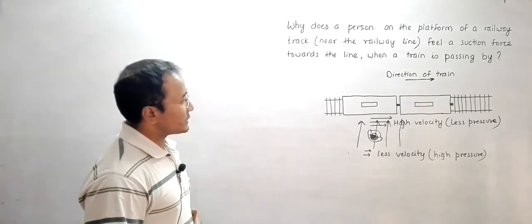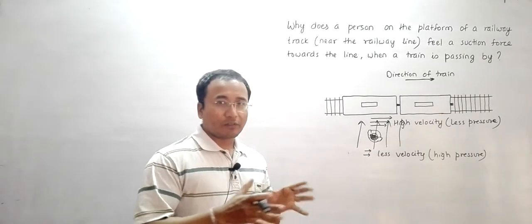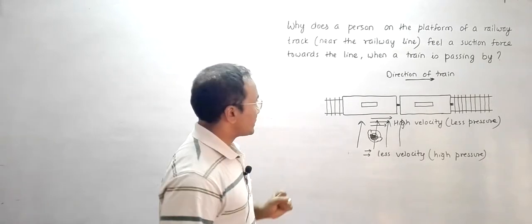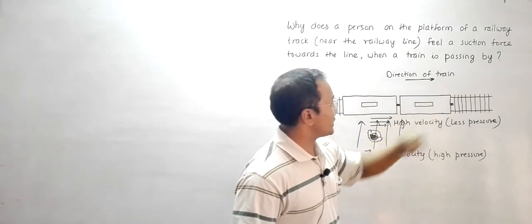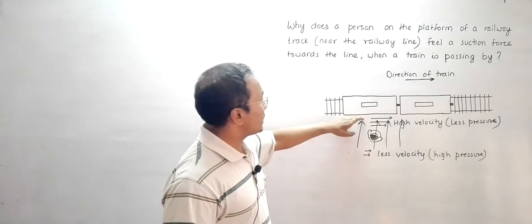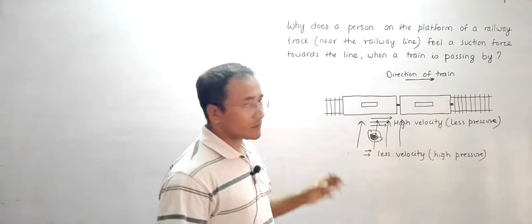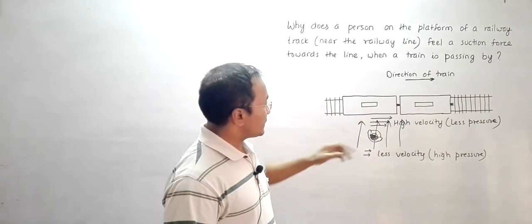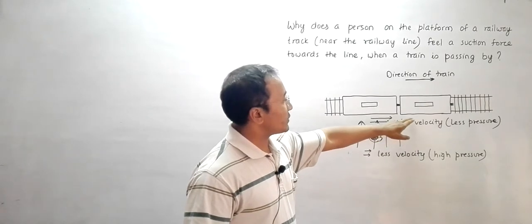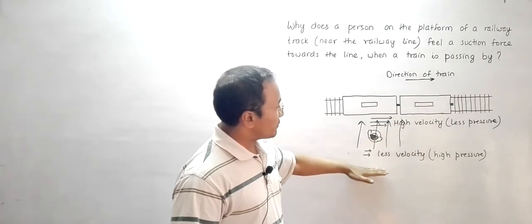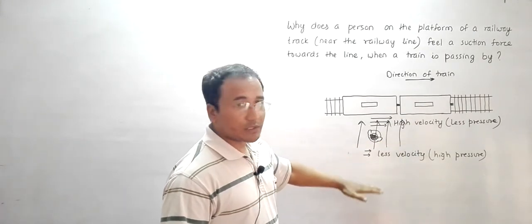This phenomenon is related to Bernoulli's principle. Let us first realize that when a vehicle is passing by with very high speed, the air molecules at the side of the vehicle also move. Because of that, there will be high velocity of air molecules in this region and less velocity of the air molecules in these regions.